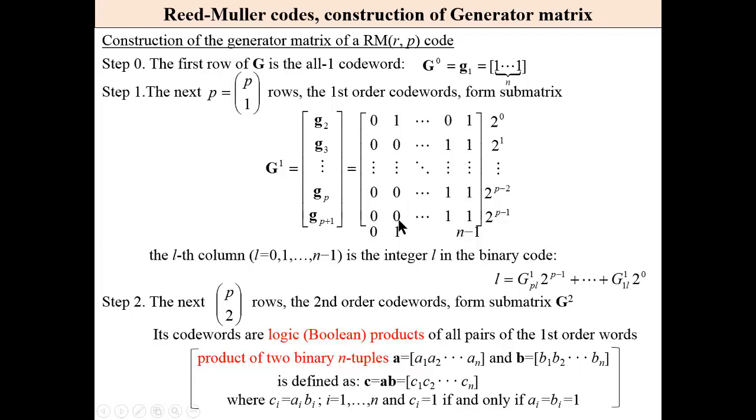The next P over 2 rows, the second order codewords, form submatrix G2. Its codewords are logic Boolean products of all pairs of the first order words of these words.